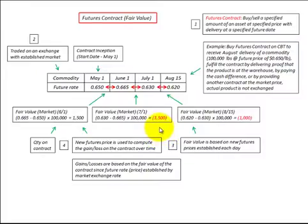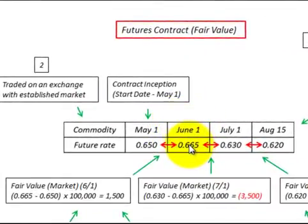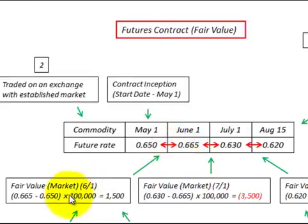To calculate our gains and losses on this futures contract, these gains and losses are based on the fair value of the contract, since the future price used for comparison is established by a market exchange rate. Looking at June 1st, we compare the June 1st future rate with the May 1st future rate — May 1st representing the contract inception or start date. The future rate on June 1st was .665, an increase over the start date of .650. So we'd recognize a gain: (.665 minus .650) times the quantity of 100,000 pounds, giving us a gain of $1,500.